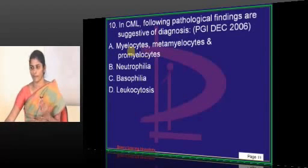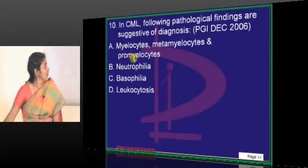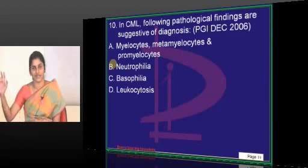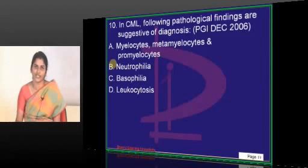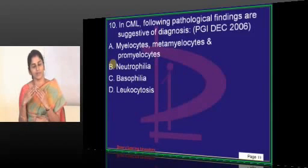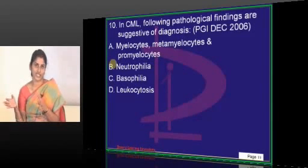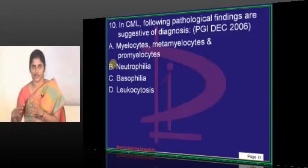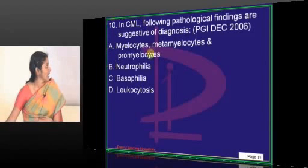This presence of immature cells is called shift to left. Shift to left is noticed in chronic myeloid leukemia and neutrophilia. It is a hematological finding that gives the clinician strong suspicion, in addition to clinical findings. There will be an increase in cell count with the majority being neutrophilic series, and in the neutrophilic series you find most cells at a mature stage along with a shift to left — these are features of the chronic phase of CML.